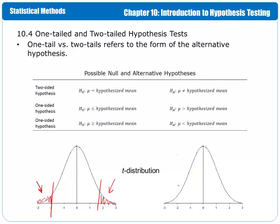In a one-tailed test, there is only concern about one side of the hypothesis. It could be the side on the left or on the right. Which side it is on depends on the sign in the alternative hypothesis. So for example, an arrow pointing to the left indicates that we're worried about values that are too small. For the hypothesis with the arrow pointing to the right, we're worried about values that are too high.